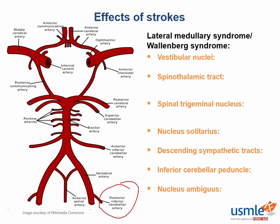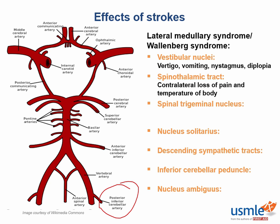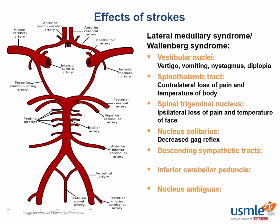With the vestibular nuclei, you would expect vertigo and vomiting. The spinothalamic tract gives contralateral loss of pain and temperature from the body. The spinal trigeminal nucleus gives ipsilateral loss of pain and temperature in the face. With the nucleus solitarius, you see a decreased gag reflex. The sympathetic tract involvement causes Horner's syndrome. The inferior cerebellar peduncle produces ipsilateral ataxia. With the nucleus ambiguus, you would see hoarseness — a key clue that helps identify lateral medullary syndrome, as you won't see it with medial medullary syndrome.